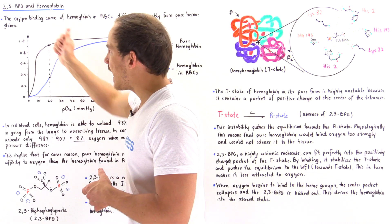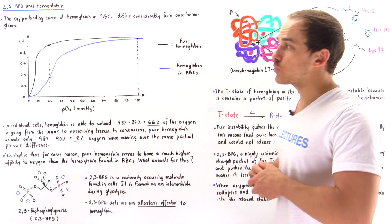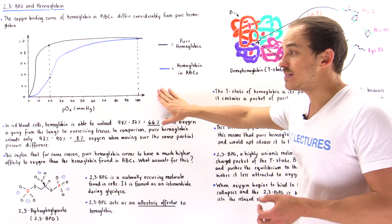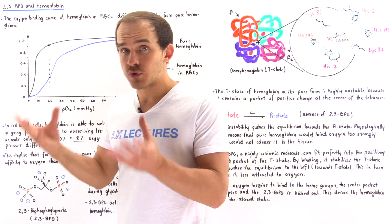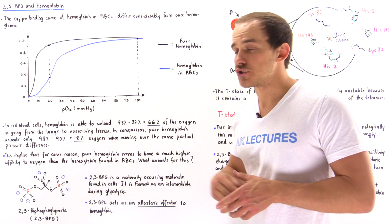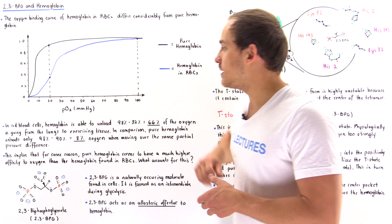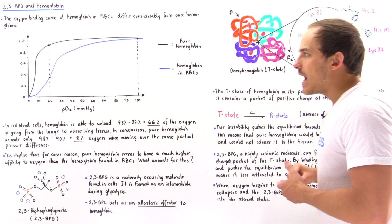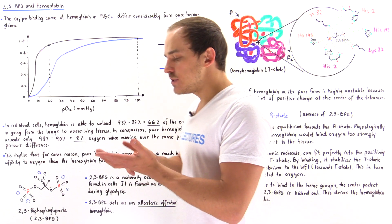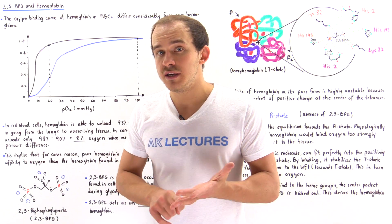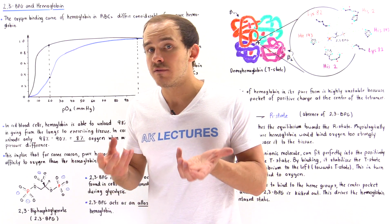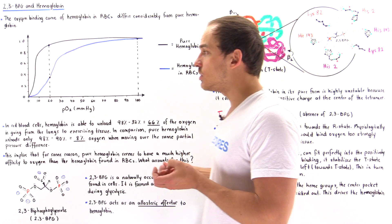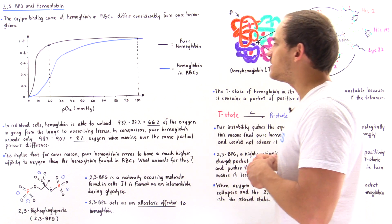In the graph, the y-axis is the fractional saturation of hemoglobin, ranging from 0 to 1. The x-axis is the concentration of oxygen in the surroundings given in partial pressures — millimeters of mercury — ranging from 0 to about 100. The black curve describes the oxygen binding curve for pure hemoglobin isolated out of red blood cells, while the blue curve describes the binding curve of hemoglobin as it is present inside red blood cells.